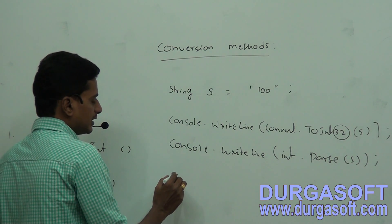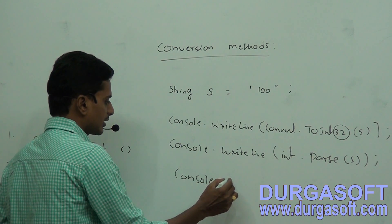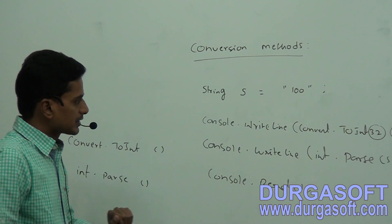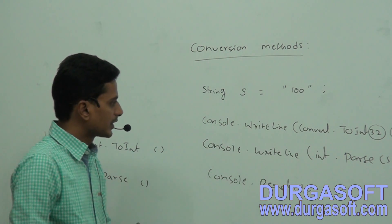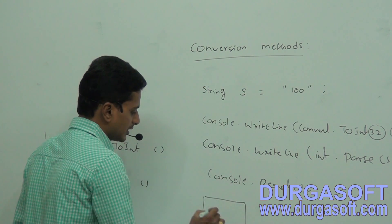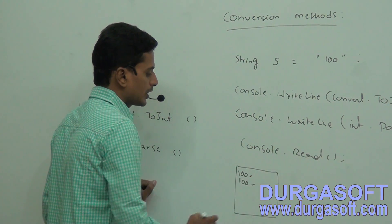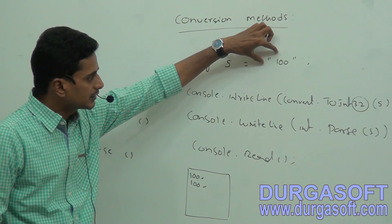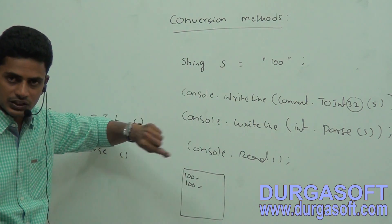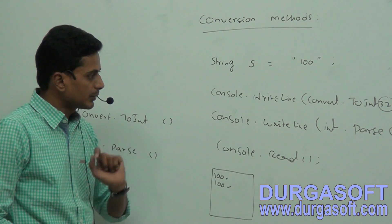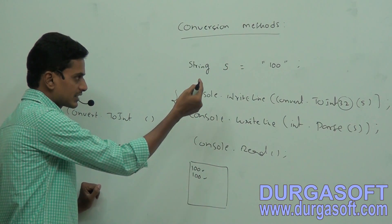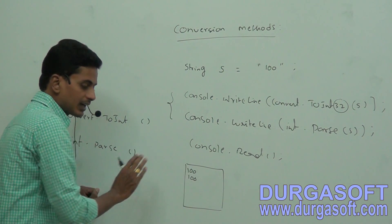The result value displayed for both statements is 100 and 100, because s value is '100' kept in double quotes — that is a string value. I'm converting it from string to integer using both conversion methods. Both methods are able to convert that string value to integer, so the result is 100 in both cases — no problem here.